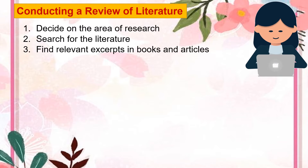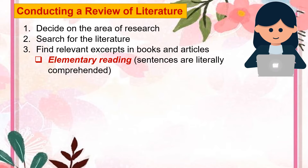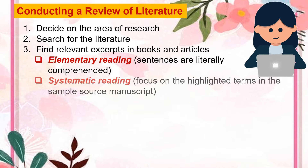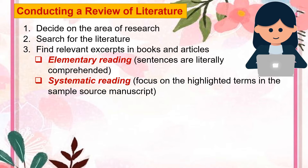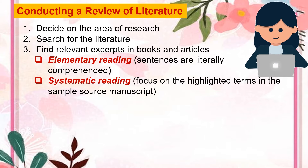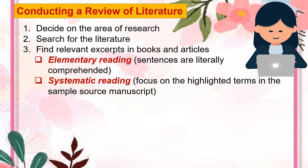These are as follows. Elementary reading — this type of reading pertains to word recognition wherein sentences are literally comprehended. Systematic reading — this type employs a scheming strategy wherein the researcher-reader may focus on highlighted terms in the sample source manuscript. Similarly, he or she may look into the title of the sample to see if similar variables of the current study are presented. If yes, he or she may consider the sample as relevant to the work.